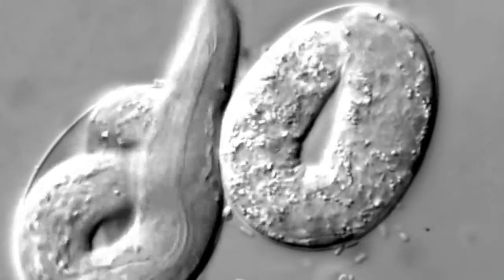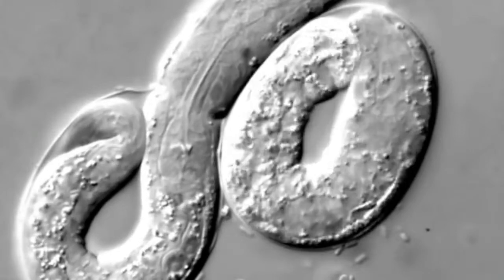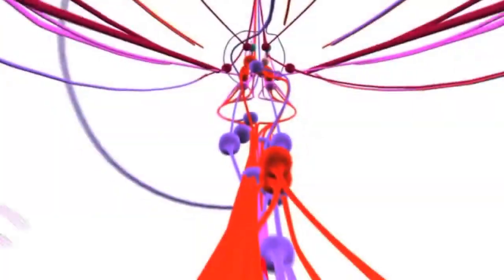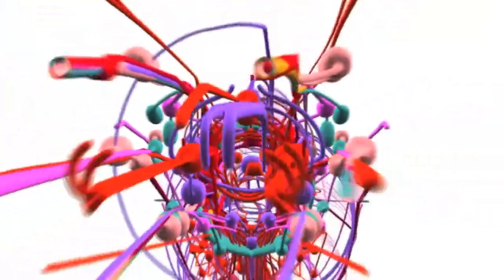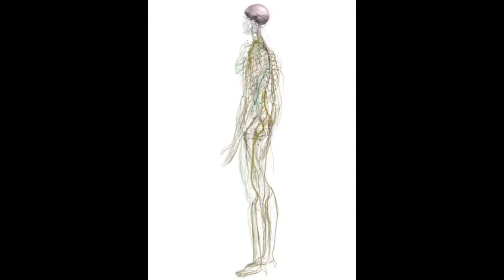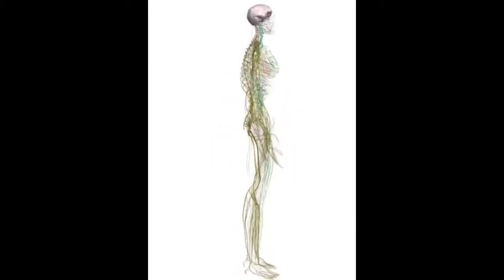There are two forms: hermaphrodites and males. Hermaphrodites have 959 somatic cells, while males have 1,031. The organism's neural circuit, made up of only 302 neurons, is extremely primitive, especially when compared to the approximately 100 billion neurons and 60 trillion synapses that make up the average human brain.